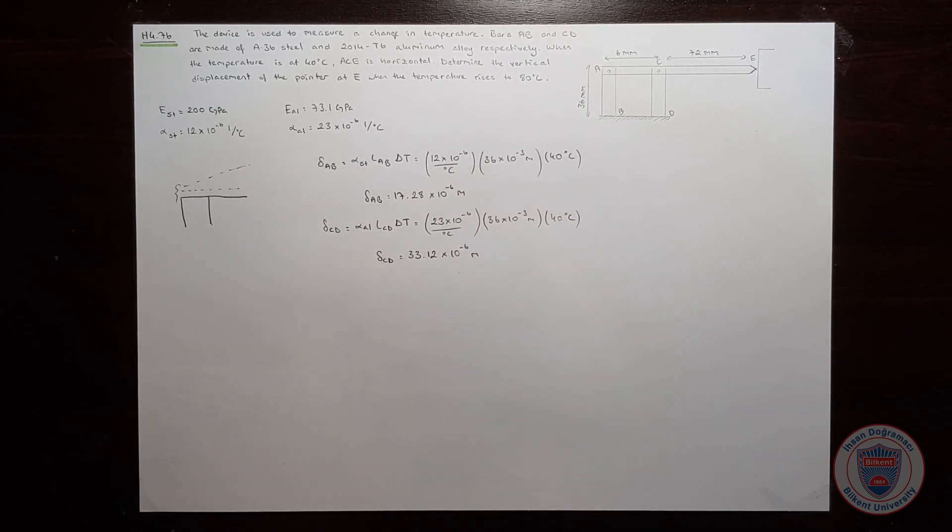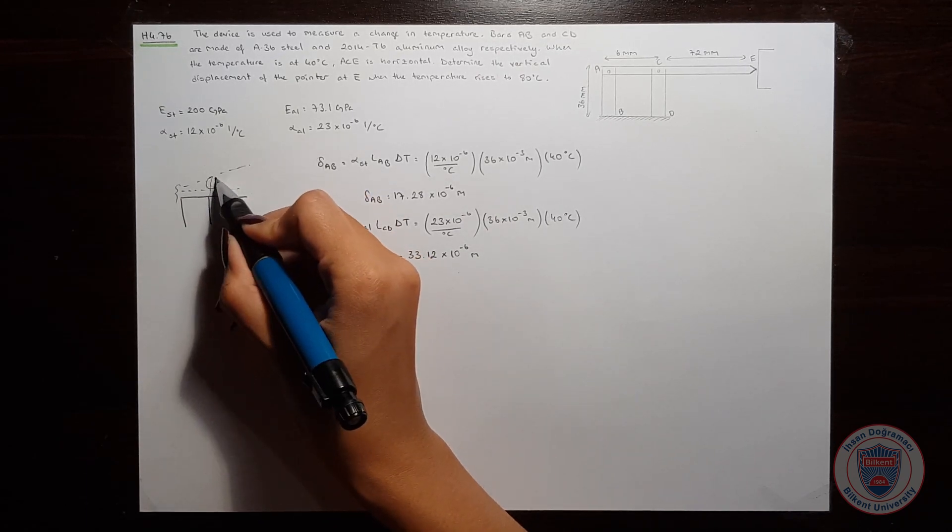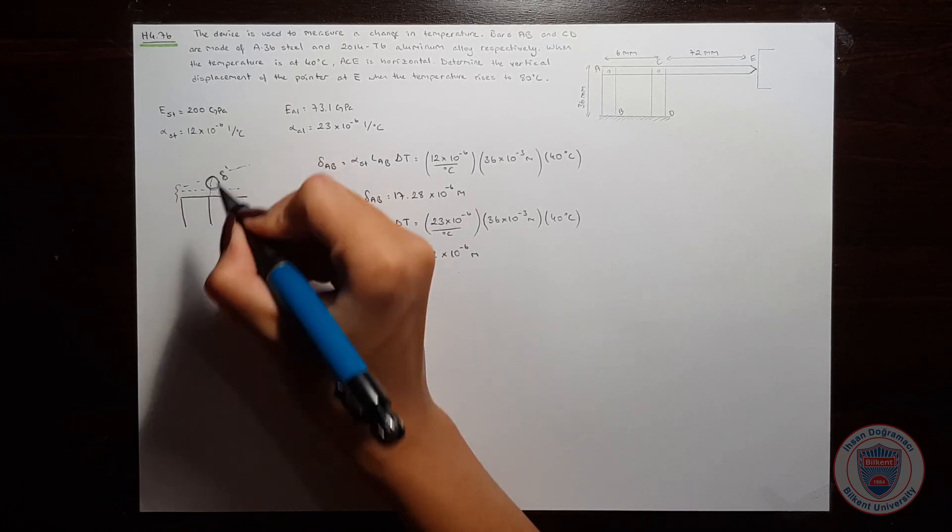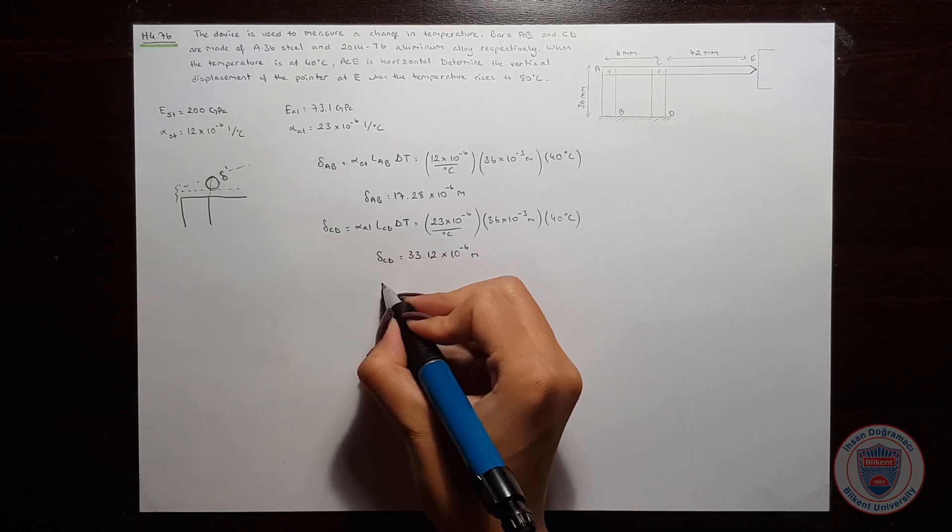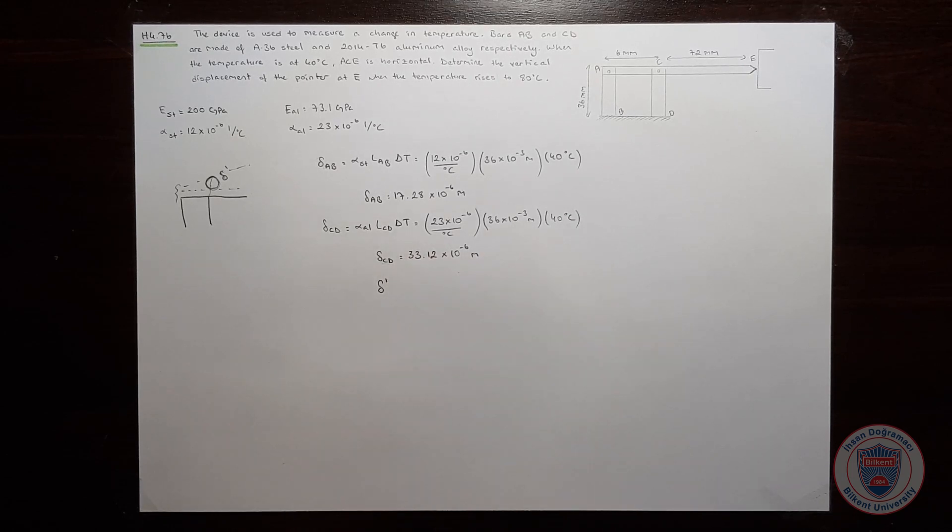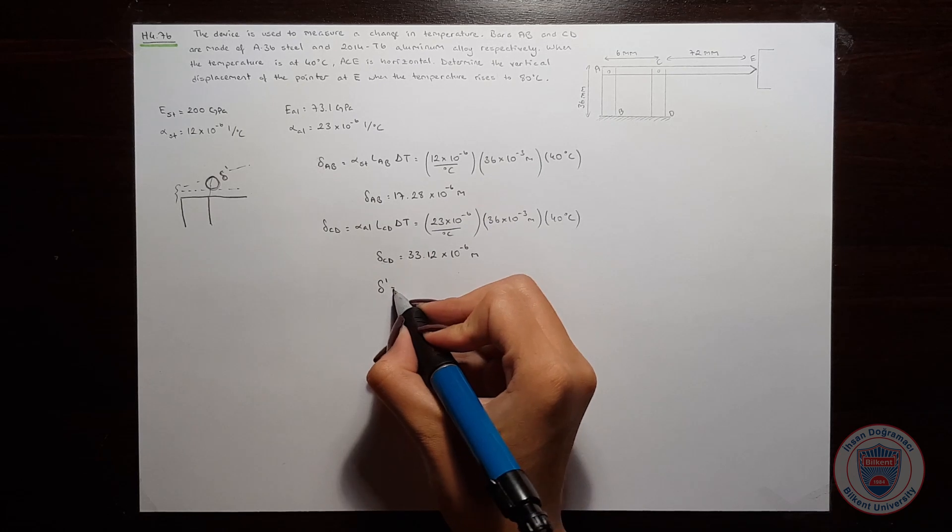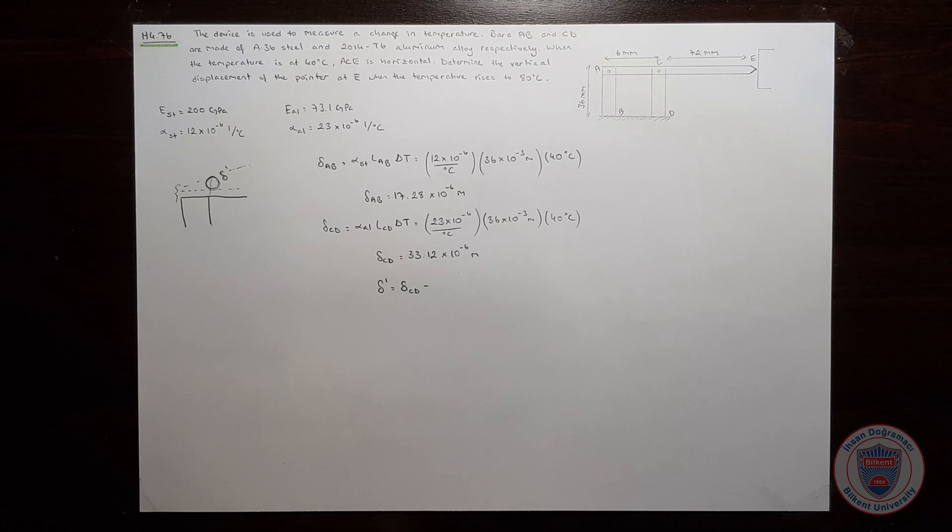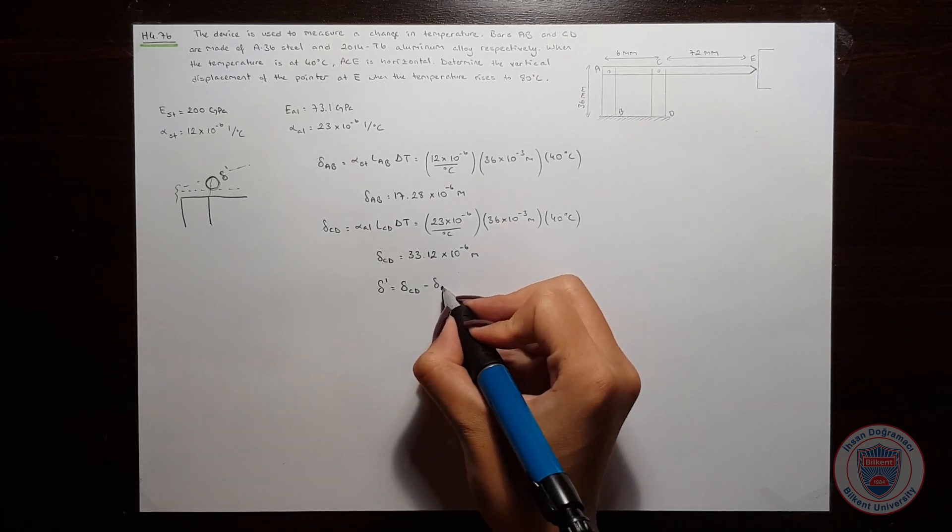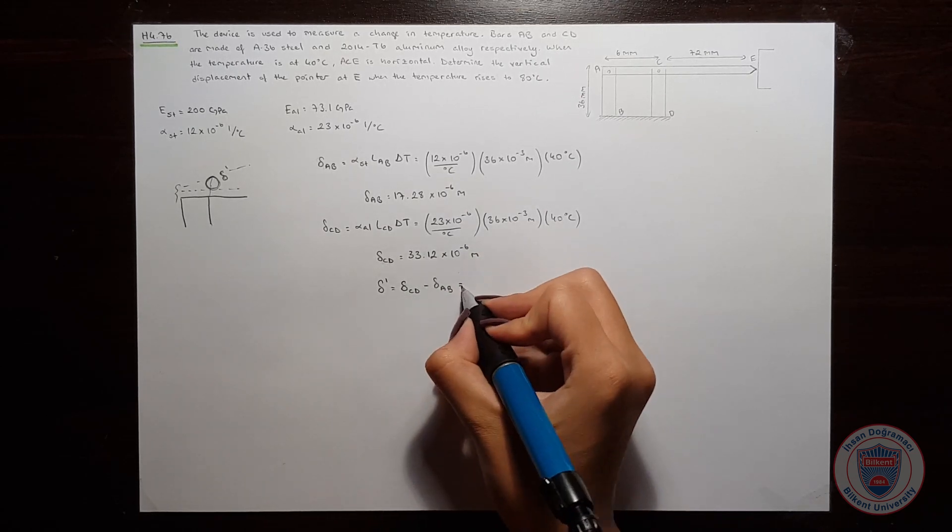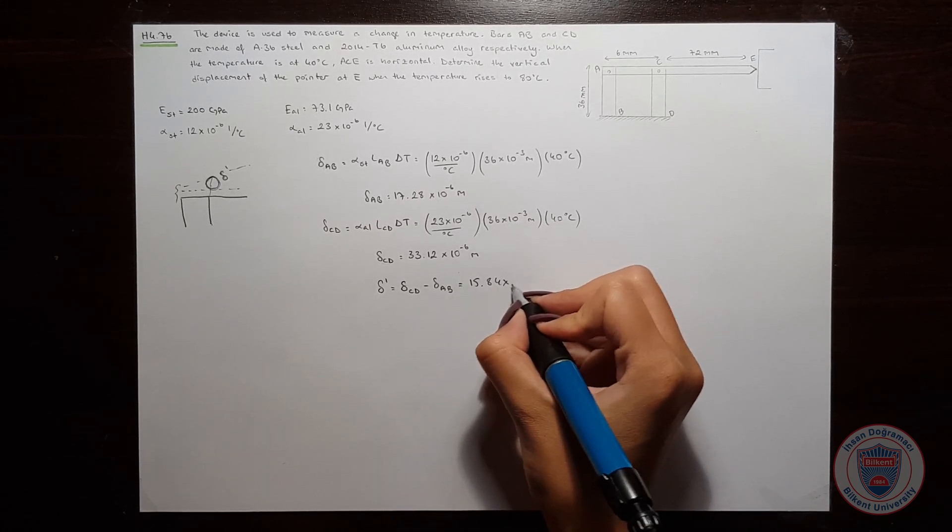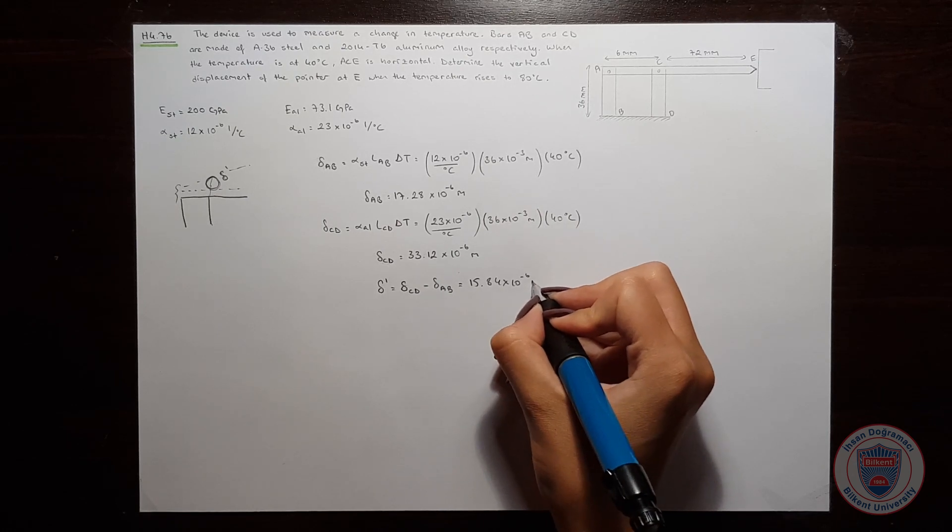We find this displacement and then this displacement. But we should know the displacement here. Let's call it this displacement prime. And it will be equal to the displacement of CD minus the displacement of AB. And it will be 15.84 times 10 to the power of minus 6 meters.